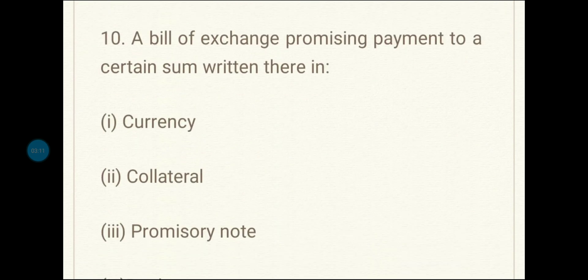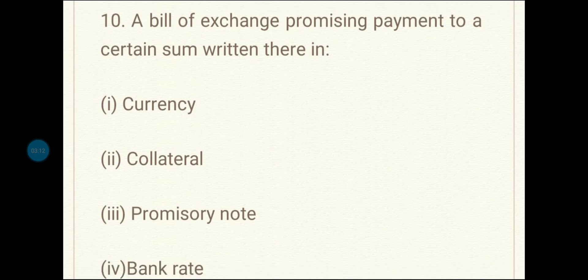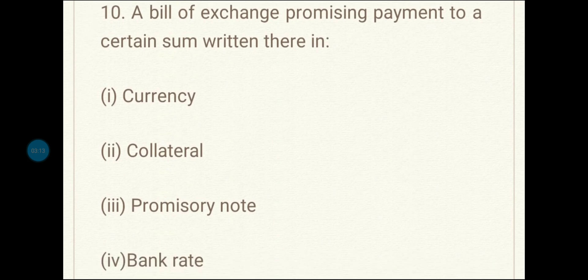Last question, tenth: a bill of exchange promising payment of a certain sum written therein — options are currency, collateral, promissory note, and bank rate. The correct answer is promissory note.